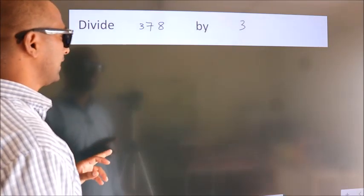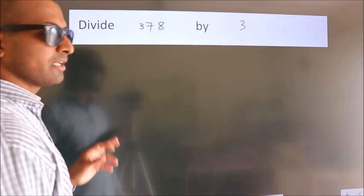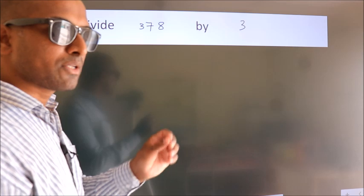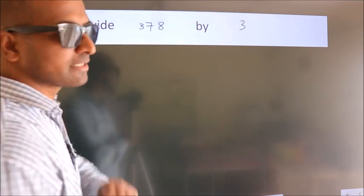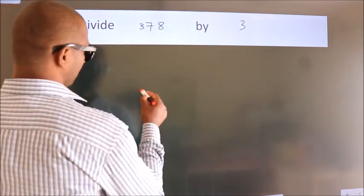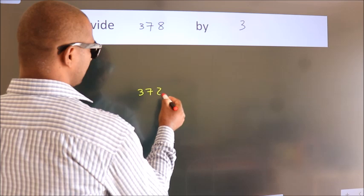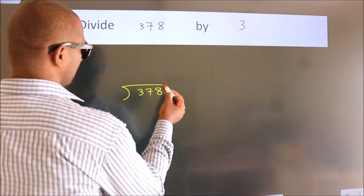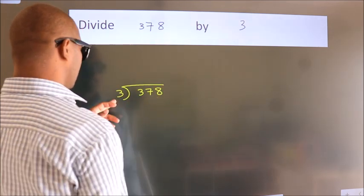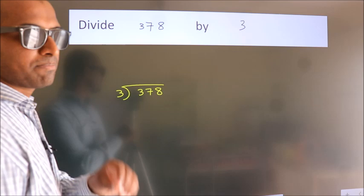Divide 378 by 3. To do this division, we should frame it in this way. 378 here, 3 here. This is your step 1.